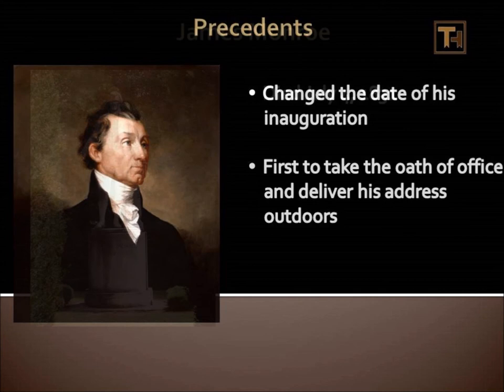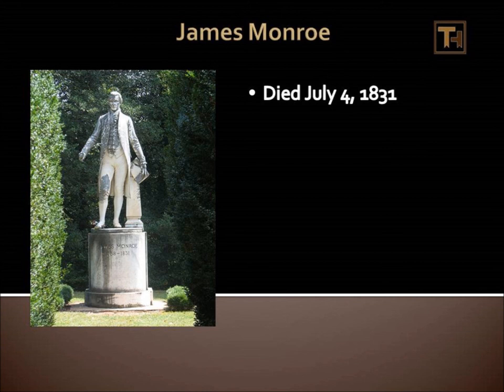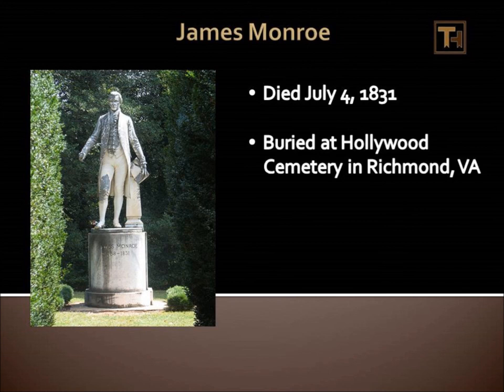James Monroe died on July 4, 1831, following John Adams and Thomas Jefferson. He was the third to die on Independence Day. He died of heart failure and tuberculosis. He is currently buried at the President's Circle at the Hollywood Cemetery in Richmond, Virginia. His tomb, the James Monroe Tomb, has been registered as a United States National Historic Landmark.